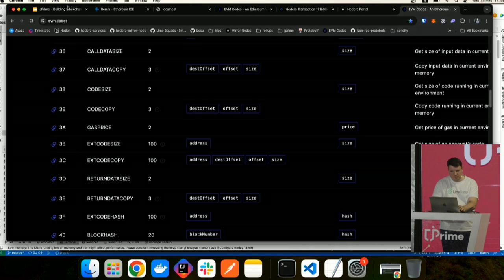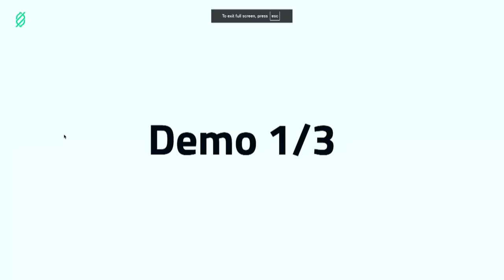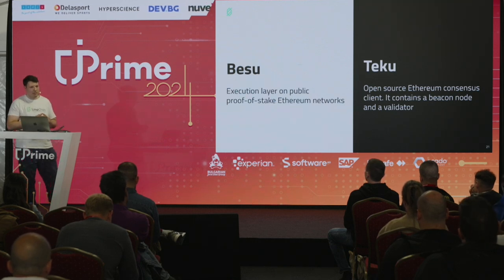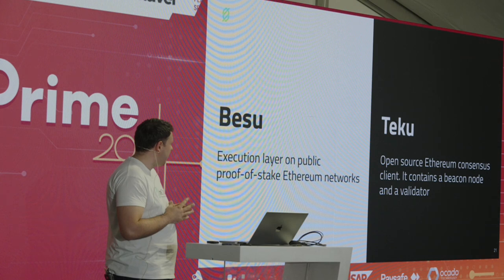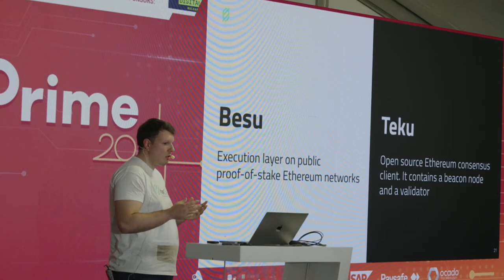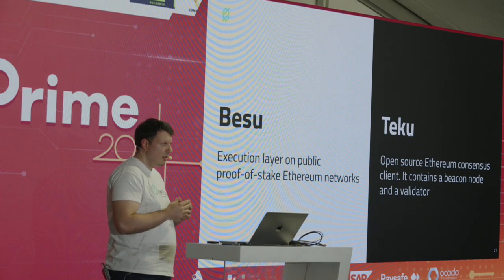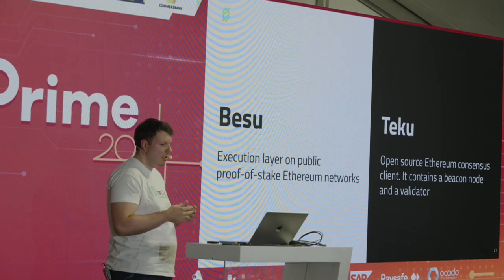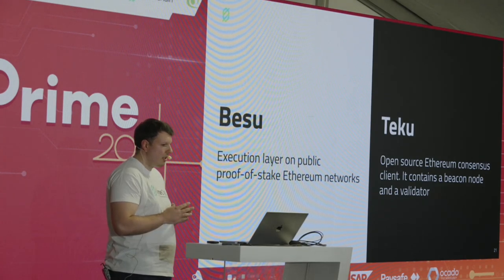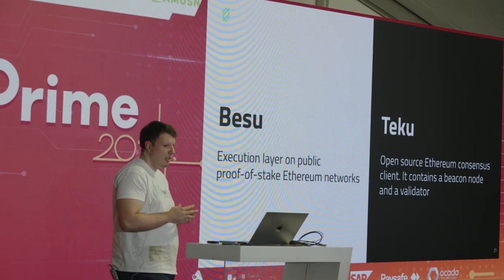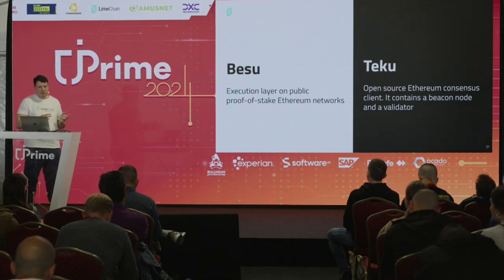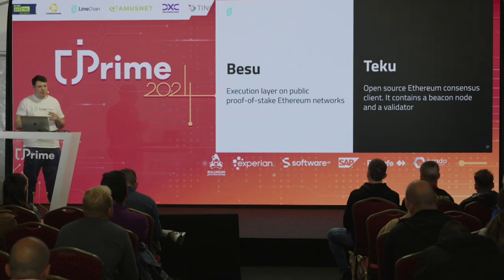We saw what the EVM is — it's the core module which executes transactions. What if we want to run a local Ethereum node? A couple of years ago, Ethereum used a consensus algorithm called proof-of-work, where we needed only one client called the execution client, which took transactions, executed them, and validated blocks. A couple of years ago, Ethereum migrated to proof-of-stake, which is more complicated. Currently, to run an Ethereum node you need two types of clients: an execution client and a consensus client. Besu is a Java-based open-source execution client, and Teku is an open-source Java-based consensus client.